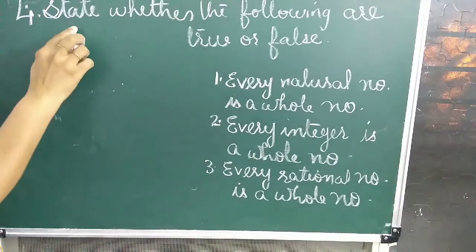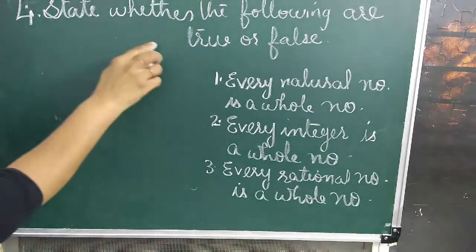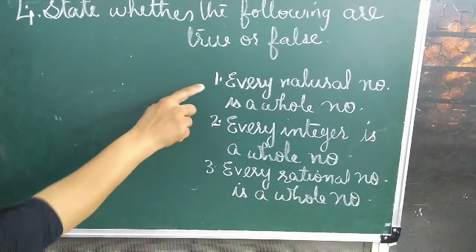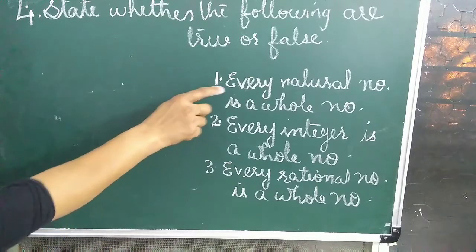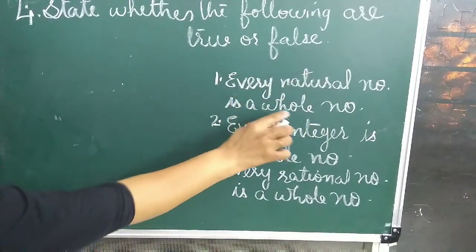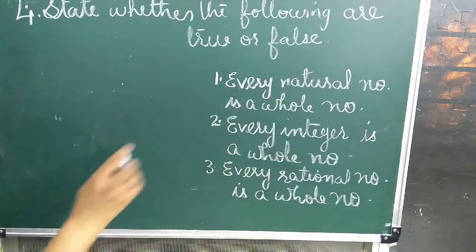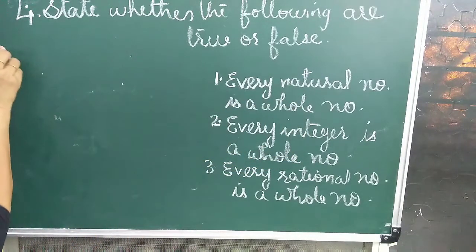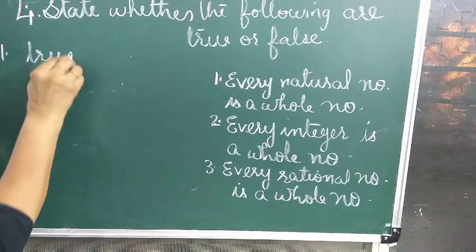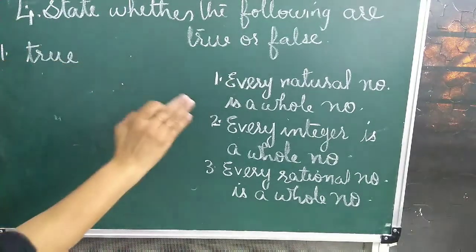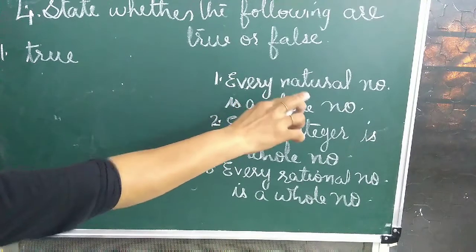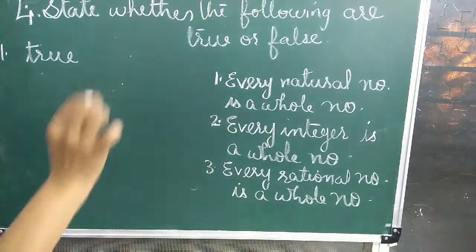Question number 4: state whether the following are true or false. First statement: every natural number is a whole number. Answer: true. Because every natural number is a whole number.